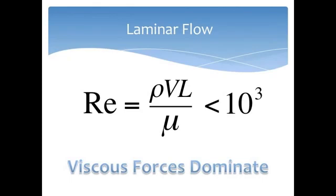When Reynolds number is less than an order of magnitude of ten to the third, fluid flow is characterized as being laminar. In this type of fluid flow, viscous forces dominate inertial forces.